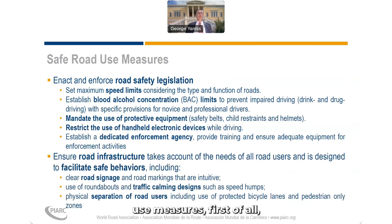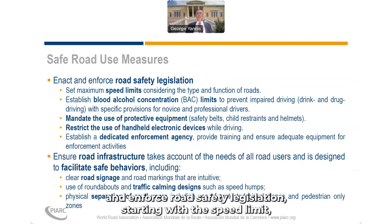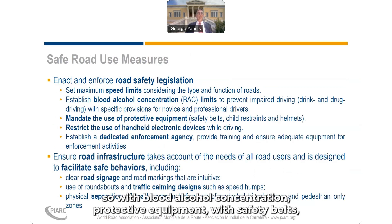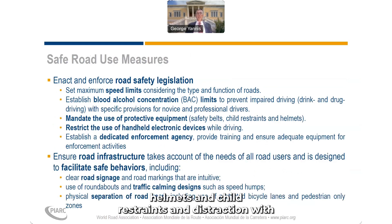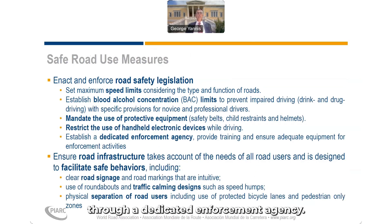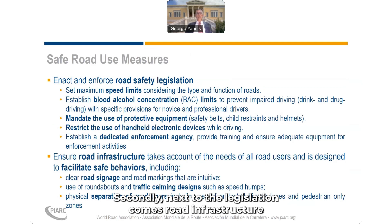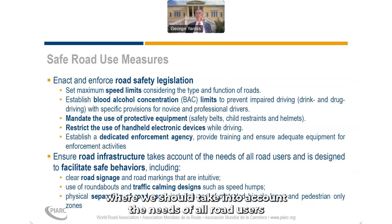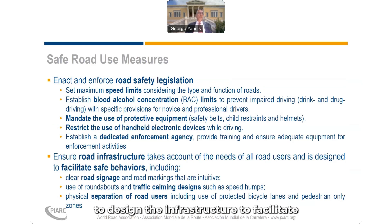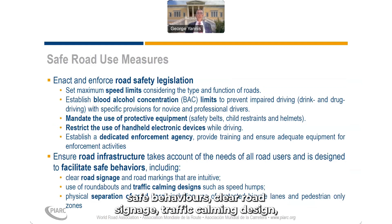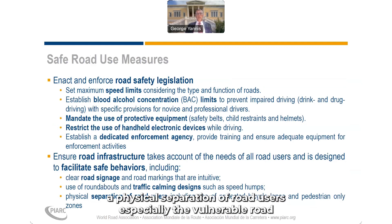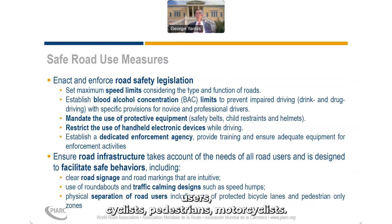Getting into the safe road use measures, especially in low- and middle-income countries, we have to enact and enforce road safety legislation starting with speed limits, blood alcohol concentration limits, protective equipment including safety belts, helmets and child restraints, and distraction through mobile phones — all through a dedicated enforcement agency. Next to legislation comes road infrastructure, where we should take into account the needs of all road users and design infrastructure to facilitate safe behaviors through clear road signals, traffic calming design, and physical separation of road users, especially vulnerable road users such as cyclists, pedestrians, and motorcyclists.